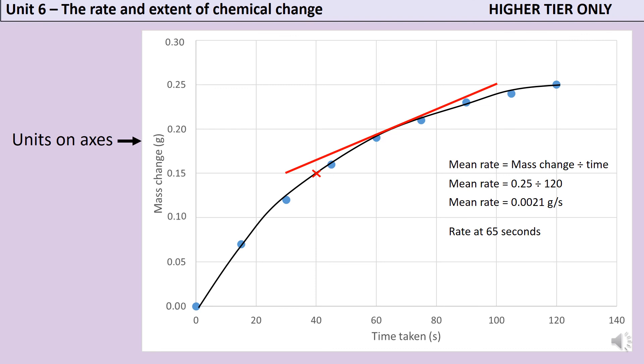I can now use that tangent to work out what the gradient of the curve is at that point. In the exam, you'd have a lot more lines to look at, so you'd be able to be a bit more accurate than I'm going to be here. But here I'm going to say that the change in mass is 0.10 grams, from 0.15 to 0.25, and then the time I'm going to take as 70 seconds, because I think that my tangent is pretty much where 30 seconds should be, and it's going up to 100. That gives me a rate of 0.0014 grams per second.